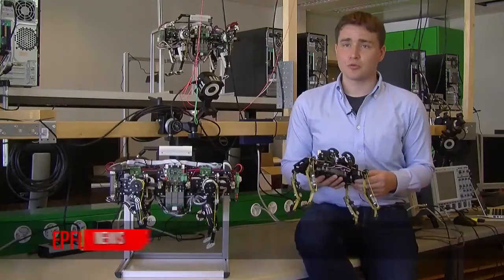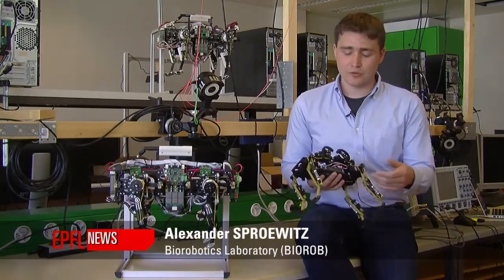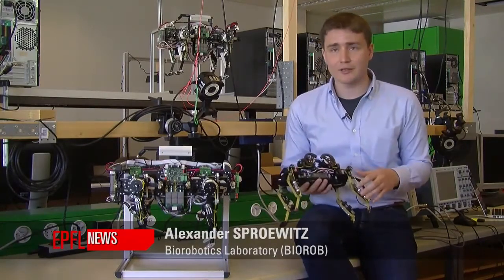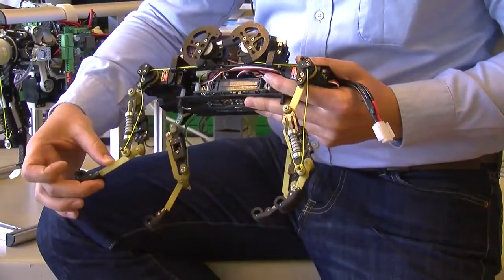In this case, we mimicked a lot of the morphology of a house cat. So we used a segmented leg design for both the front and the hind leg. We're using springs as a replacement for tendons.